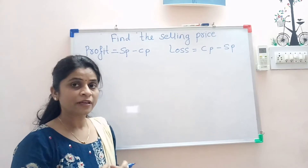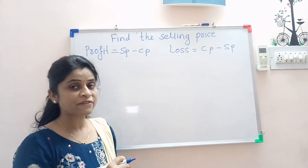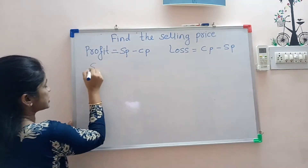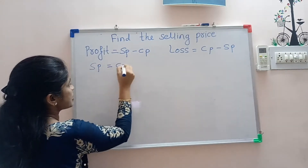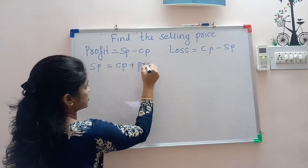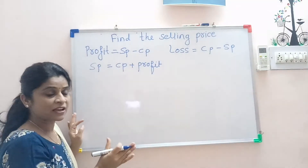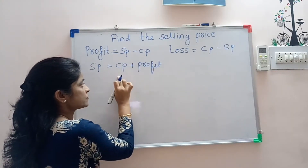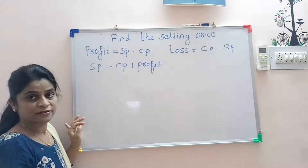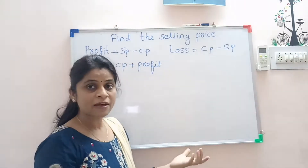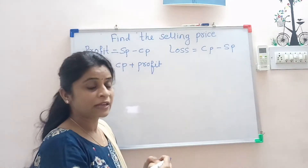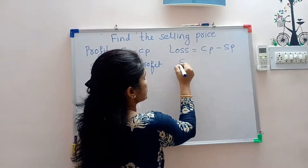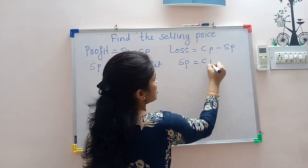Now, if in the example cost price is given with the profit and you have to find the selling price, we use the formula: selling price is equal to cost price plus profit. If in the example cost price is given with loss and you have to find out the selling price, you use the formula: selling price is equal to cost price minus loss.